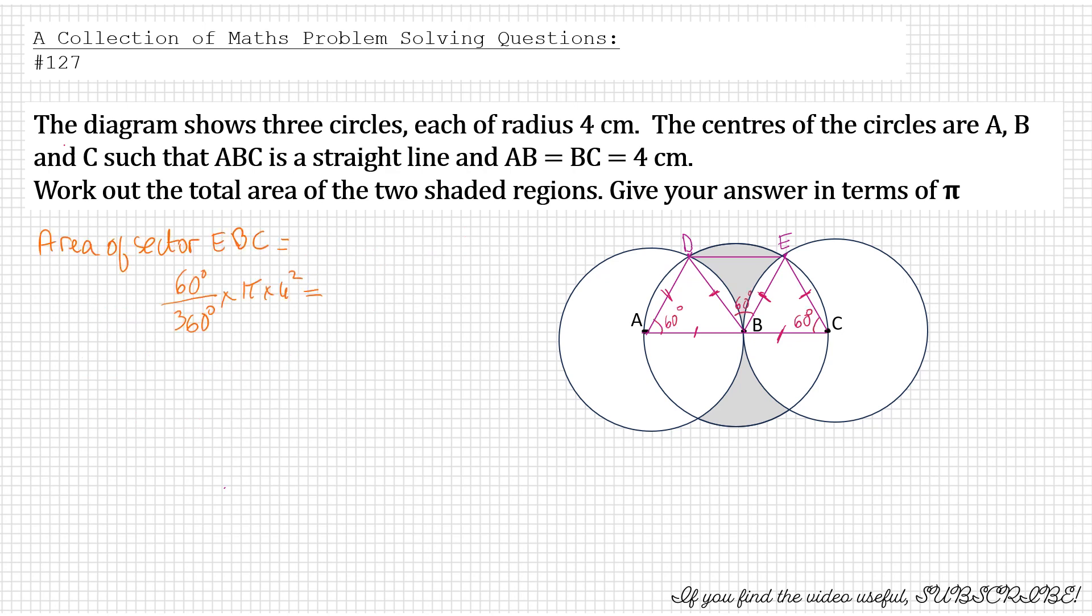And now we come to finding the sectors and the area of the sectors. So first we work out the area of sector EBC or ECB. And that would be 60 divided by 360 times pi times 4 squared, which is the radius. And that gives you 8 over 3 pi. And then we need to find the area of triangle EBC. Because what we found, 8 over 3 pi, is this part, the whole part. This is 8 over 3 pi.